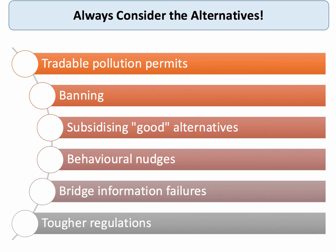It's really important to think about the alternatives. Pollution tax is one possibility; tradable pollution permits are another. We could ban things which create negative externalities, subsidize good alternatives such as low-carbon or renewable energies, or use behavioral nudges to get people to change their behavior. There might also be a fundamental lack of information on behalf of consumers and producers, so we might think about how to bridge the information gap. And in industries such as motor transport, aviation, chemicals, and recycling, the alternative to a tax is to be much tougher on regulations to drive changes in producer behavior.